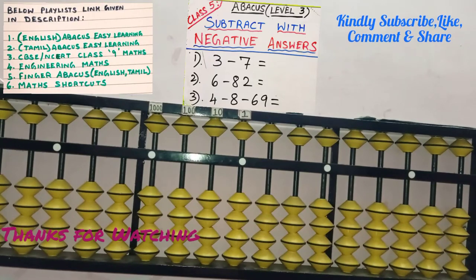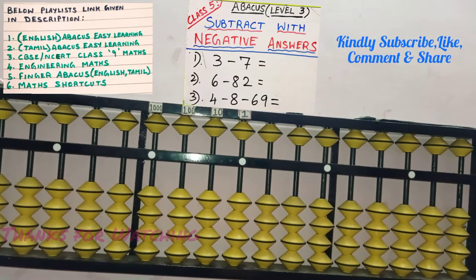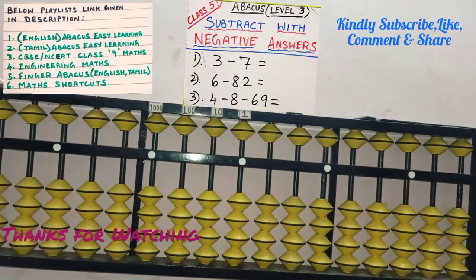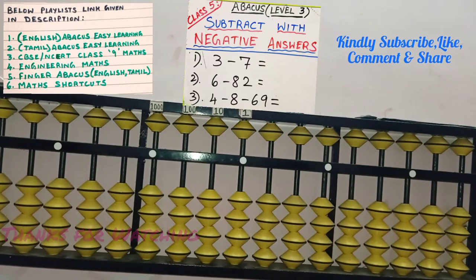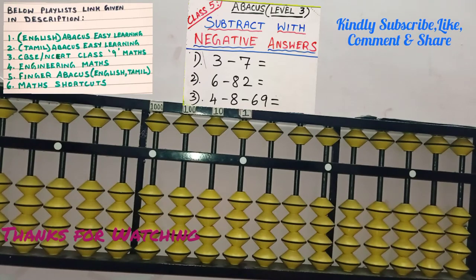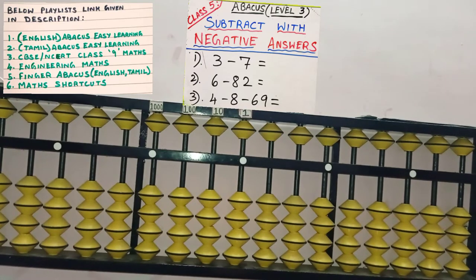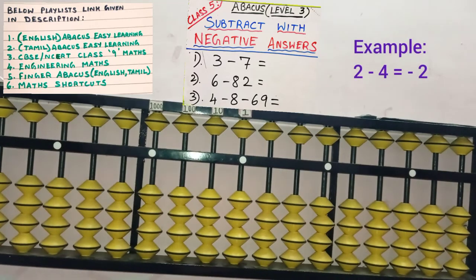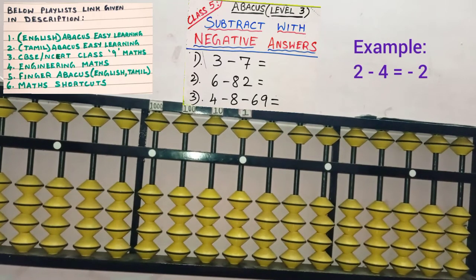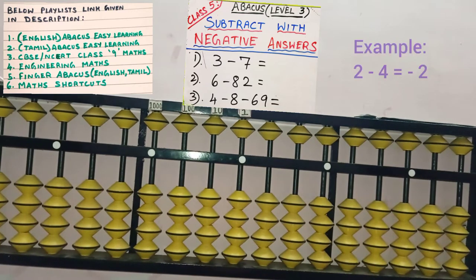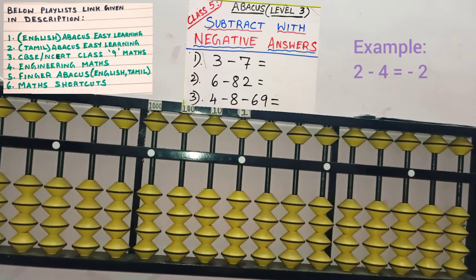Hello friends, we are in Level 3 Class 5 in Abacus. Here we are going to learn subtraction with negative answers using Abacus. Generally, when we try to subtract the largest number from the smallest number, our result will be negative. For example, 2 minus 4 means minus 2. That kind of problem we are going to see here.